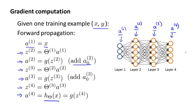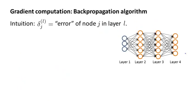Next, in order to compute the derivatives, we're going to use an algorithm called backpropagation. The intuition of the backpropagation algorithm is that for each node, we're going to compute the term delta superscript l subscript j, which will somehow represent the error of node j in layer l. Recall that a superscript l subscript j is the activation of the j-th unit in layer l, and so this delta term captures our error in the activation of that node, or how we might wish the activation were slightly different.